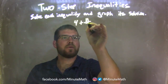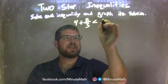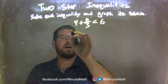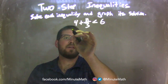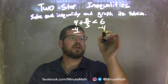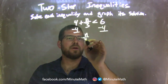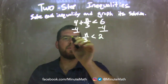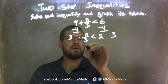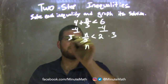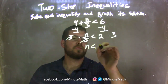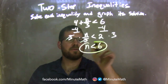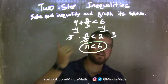4 plus N over 3 is less than 6. First step: subtract 4 from both sides, leaving me with N over 3 is less than 6 minus 4, which is 2. From there, multiply both sides by 3 — the 3s cancel — giving me N by itself, which is less than 2 times 3, which is 6. N is isolated — N is less than 6.